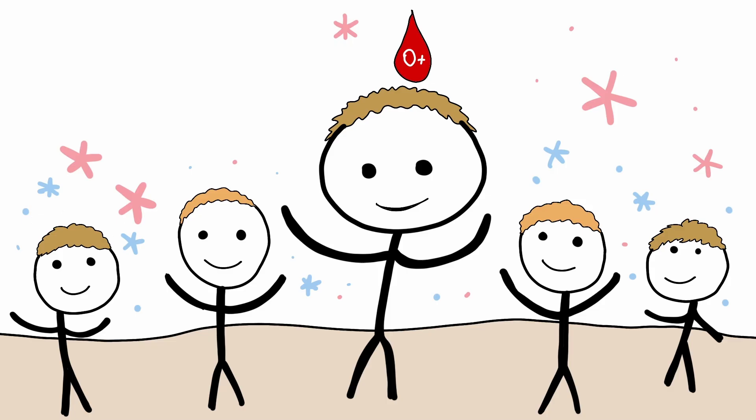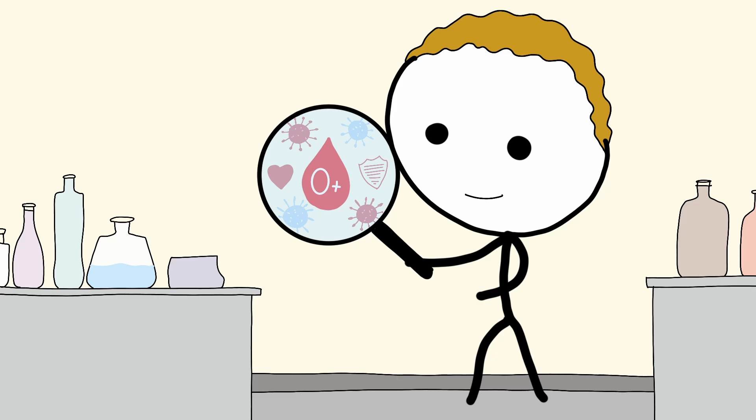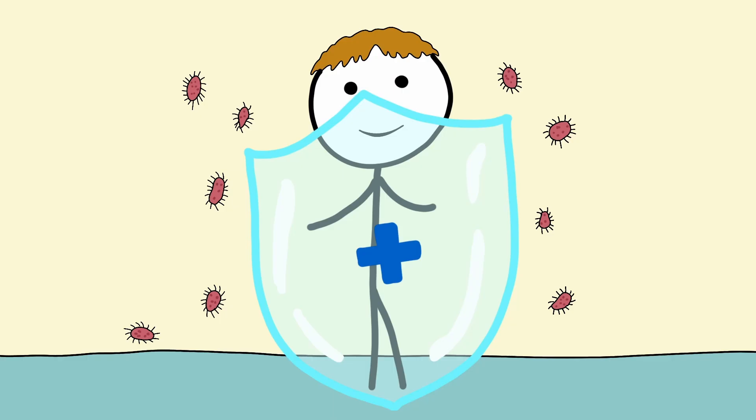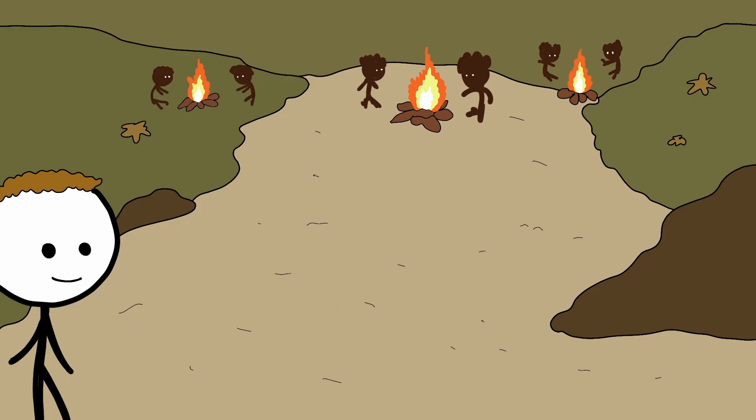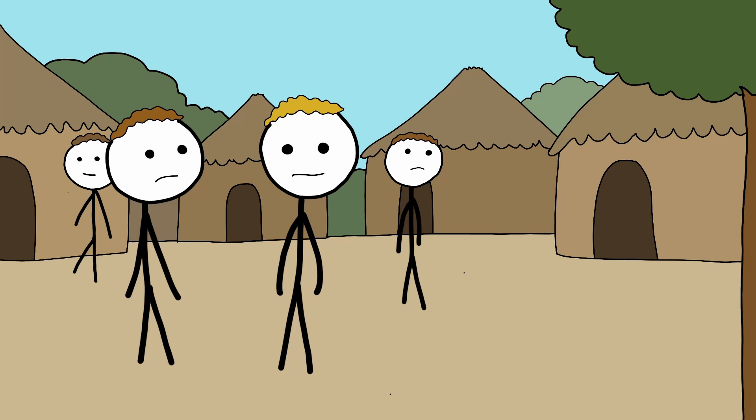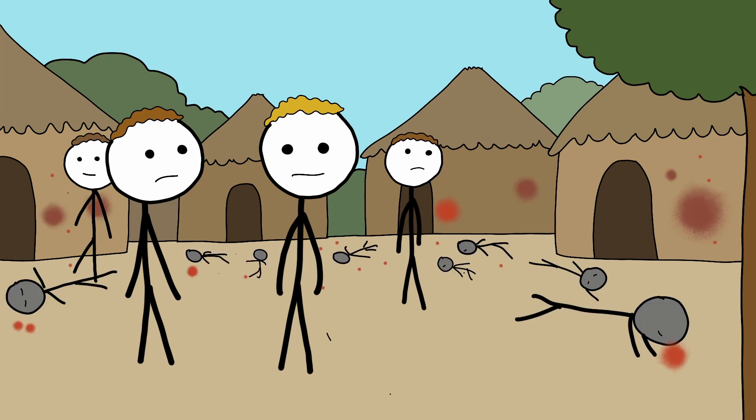O-positive blood is often called the universal donor for red cells, but its advantages run far deeper. Research shows that O-type individuals have stronger immune defenses against deadly infections like malaria and dengue. That resistance traces back tens of thousands of years. Your ancestors' O-type blood helped them survive epidemics that wiped out entire populations.